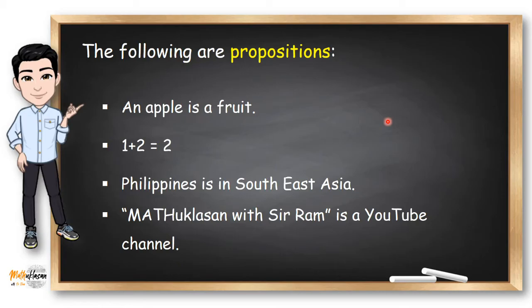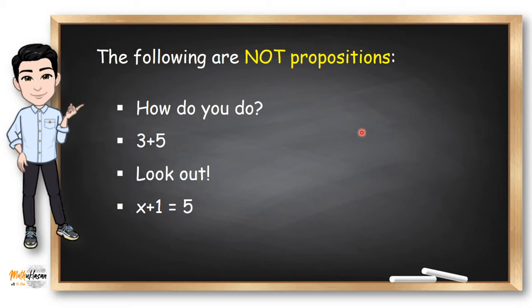Here are other examples of propositions. An apple is a fruit. One plus two equals two. Philippines is in Southeast Asia. Matuklasan with Sir Ram is a YouTube channel.